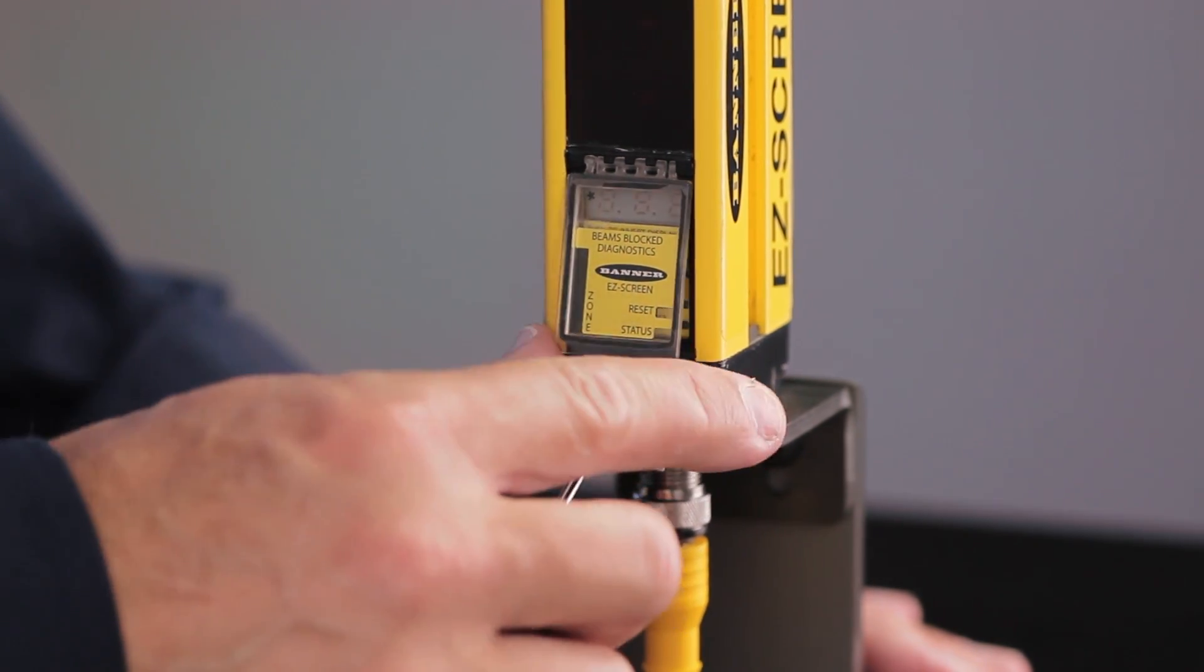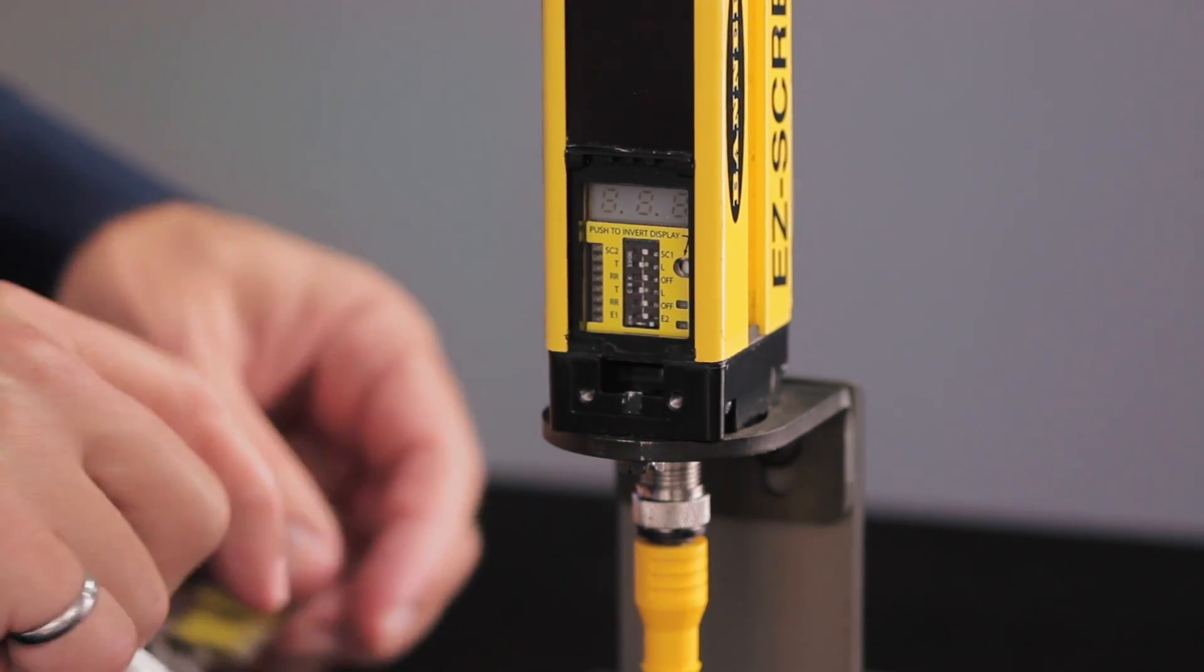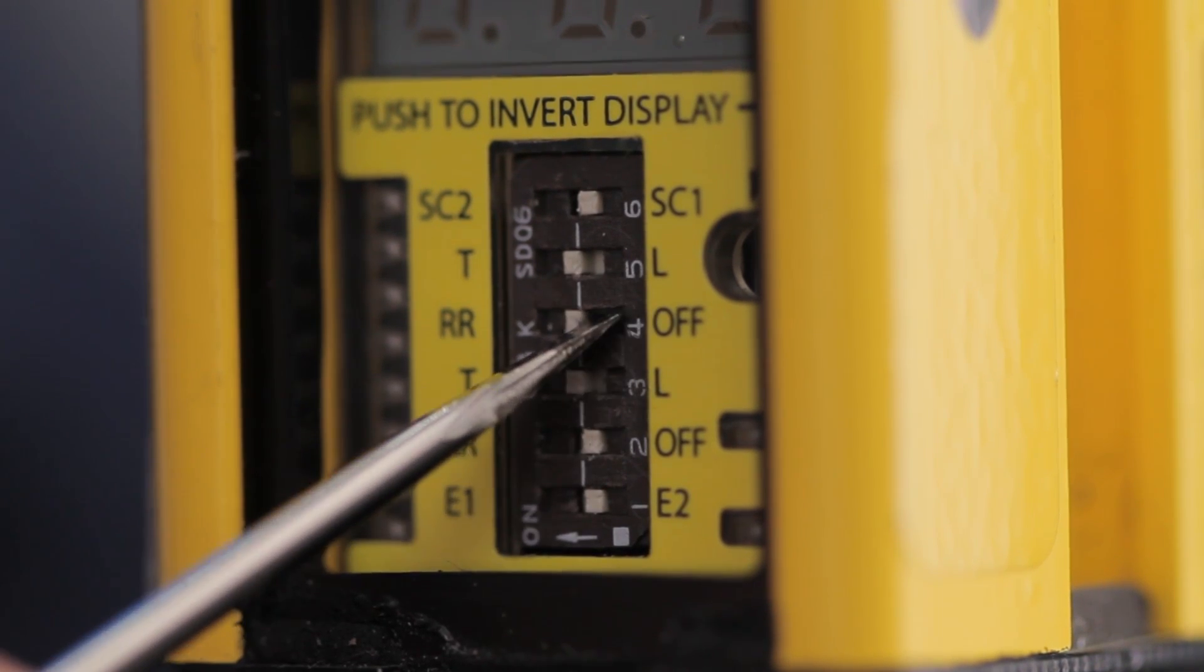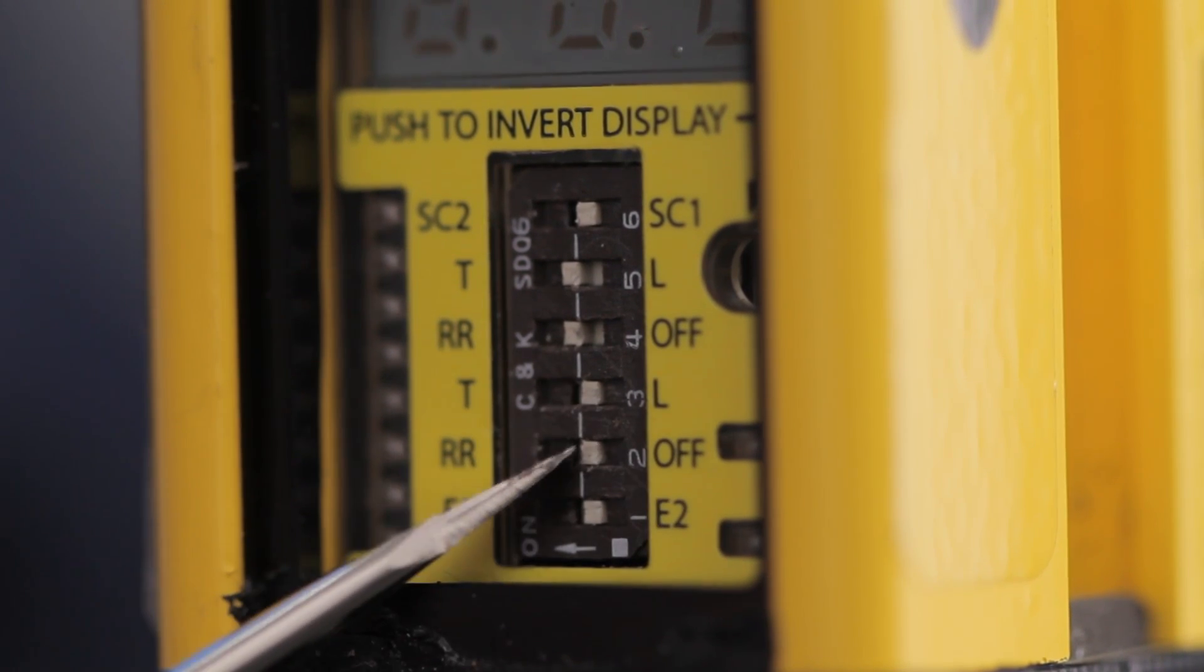Open the access door on the receiver, leaving the top and the bottom dip switch alone, set the center forward to the following arrangement: left, left, right, right.